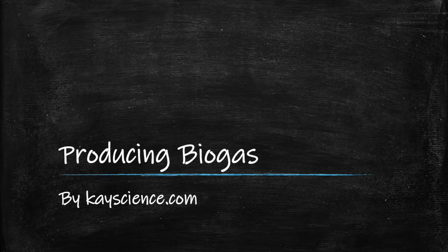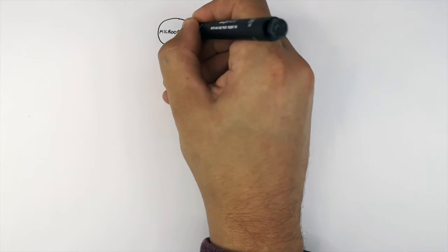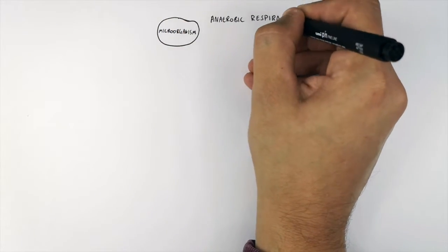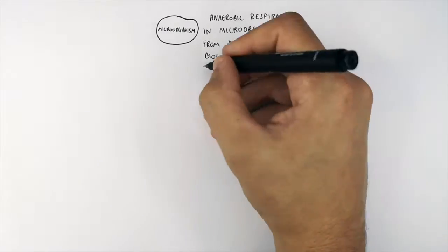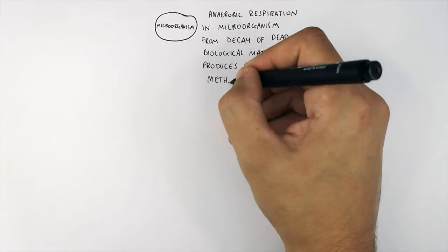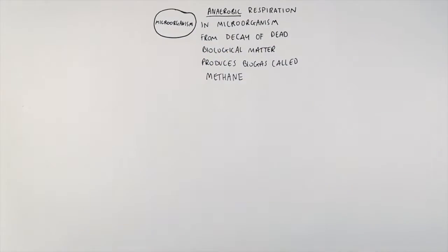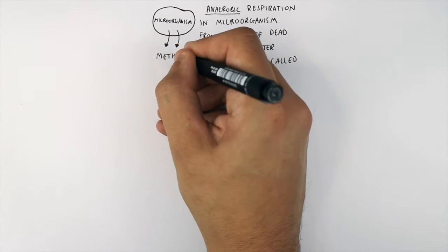Producing biogas in biogas generators by kscience.com. This here is a microorganism, and it's the anaerobic respiration in microorganisms from decay of dead biological matter that produces biogas called methane. So methane is the byproduct of anaerobic respiration in microorganisms.